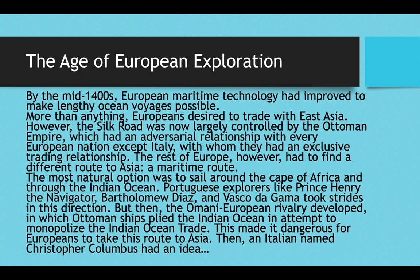Bartholomew Diaz was the first European to sail around the southern tip of Africa; he then returned home. Following him, Vasco da Gama went all the way around Africa and all the way to India — a very important voyage for European exploration. But then the Omani-European rivalry developed, in which Ottoman ships would ply the Indian Ocean in an attempt to monopolize Indian Ocean trade, making it dangerous for Europeans to take this route to Asia.